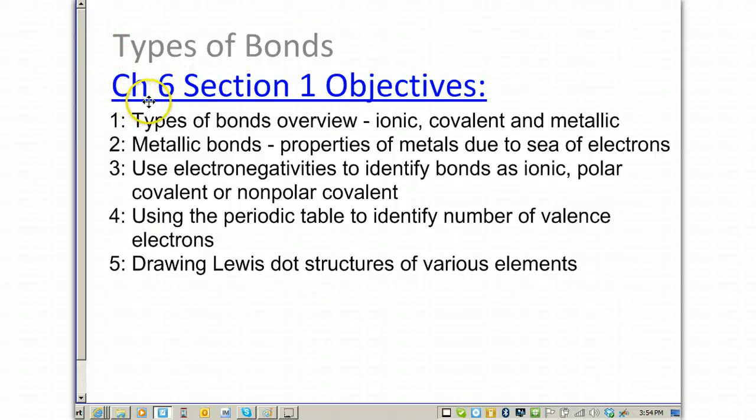Chapter 6, Section 1. The objectives are: we're going to look at an overview of each type of bond - ionic, covalent, and metallic. We're also going to describe the properties of metallic bonds. We're going to use electronegativities to distinguish between an ionic, polar covalent, or non-polar covalent bond. And then we're going to review using the periodic table to identify a number of valence electrons and how to draw a Lewis dot structure.